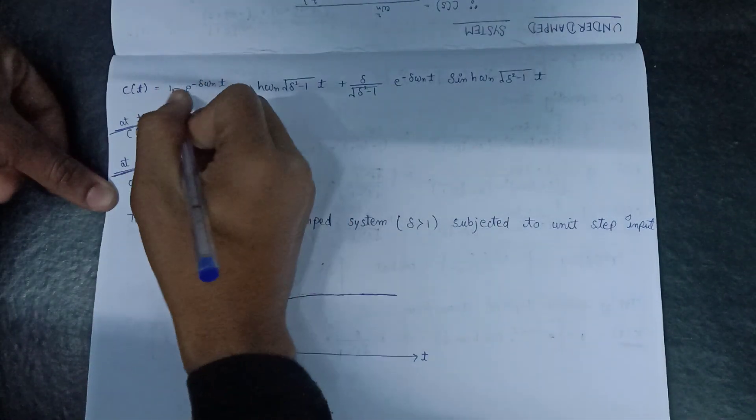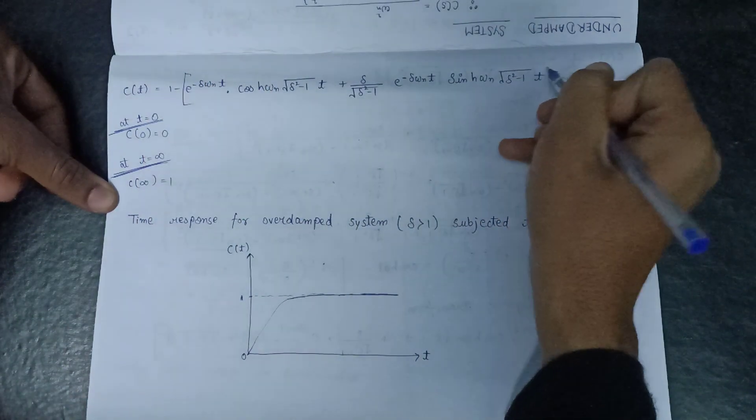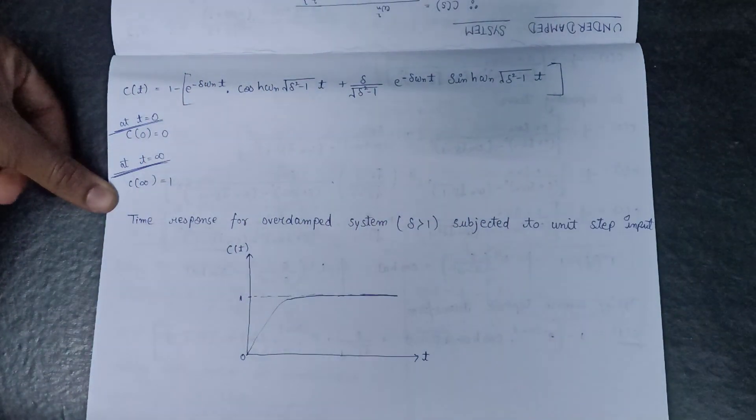In the final expression of C(t), there is also a square bracket here. Thank you.